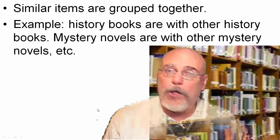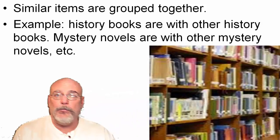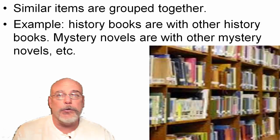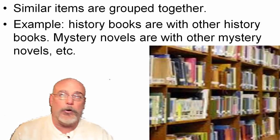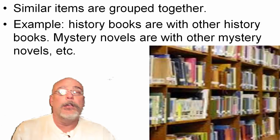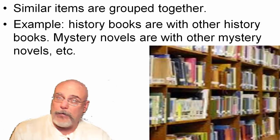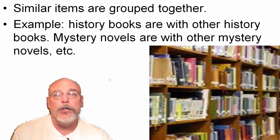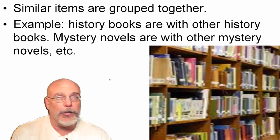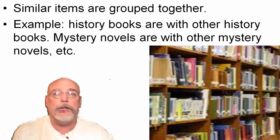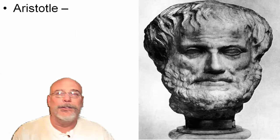Think about libraries. Library books are organized by subject matter — history books are together with history books, mystery books are together with mystery books. You would not organize library books alphabetically. One area where you do get alphabetical organization, interestingly, is the fiction section — books there are organized alphabetically by the author's last name.